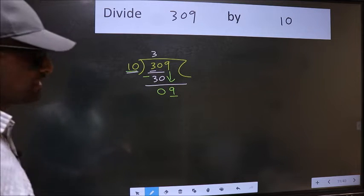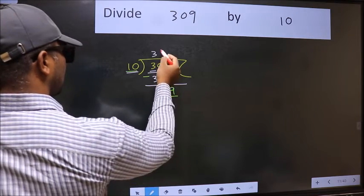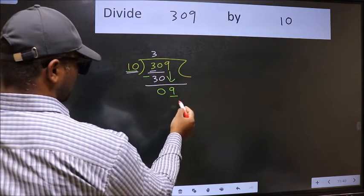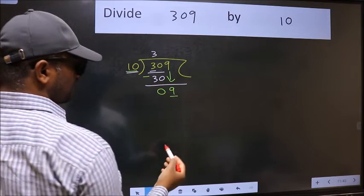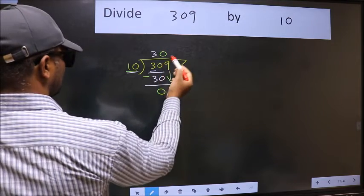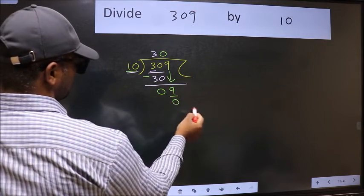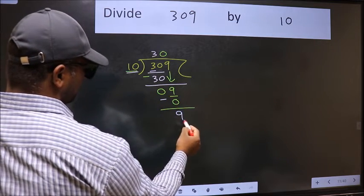Instead of that, what you should think of doing is which number should we take here. If I take 1, we will get 10, but 10 is larger than 9. So what we should do is we should take 0. 10 into 0. Now we should subtract. We get 9.